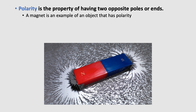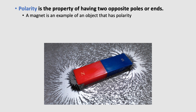A magnet is an example of an object that has polarity. Molecules that have an unequal distribution of charges are called polar molecules, and they have oppositely charged regions just like a magnet. In our water molecule H2O, the hydrogens are partially positive and the oxygen is partially negative, creating these weak attractional forces between them.